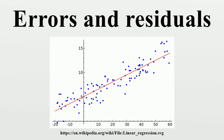It is remarkable that the sum of squares of the residuals and the sample mean can be shown to be independent of each other, using, e.g., Basu's theorem. That fact, and the normal and chi-squared distributions given above, form the basis of calculations involving the quotient. The probability distributions of the numerator and the denominator separately depend on the value of the unobservable population standard deviation sigma, but sigma appears in both the numerator and the denominator and cancels. That is fortunate because it means that even though we do not know sigma, we know the probability distribution of this quotient. It has a Student's t distribution with n minus 1 degrees of freedom. We can therefore use this quotient to find a confidence interval for mu.